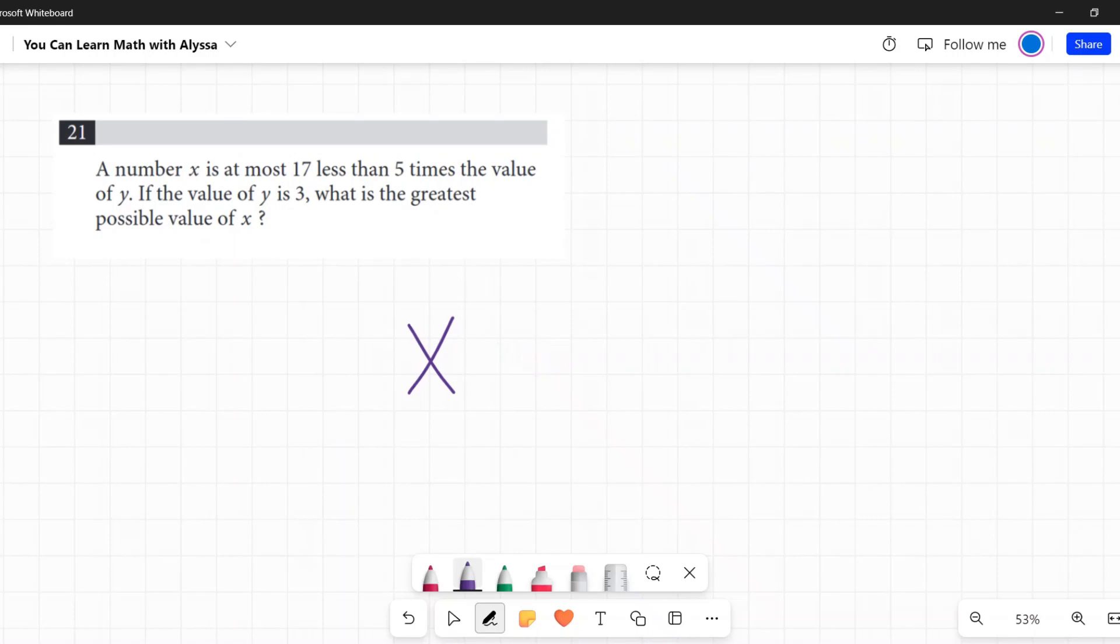So X is at most. So it's not bigger than it. It's going to be less than it. So it is less than, or it could be equal to. So it could be that, but that's the most it could be. If it's anything, it's going to be less than that. So X is less than or equal to.